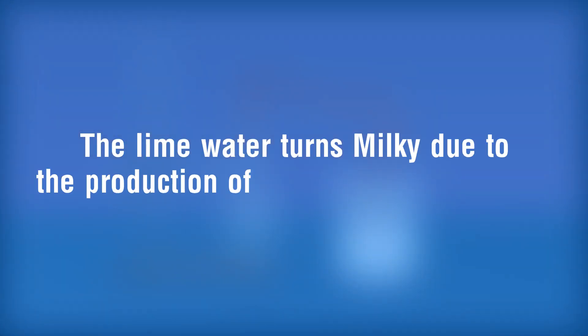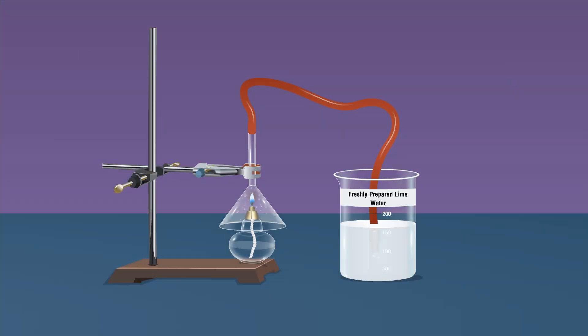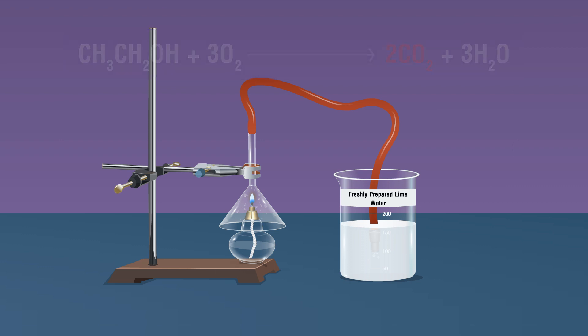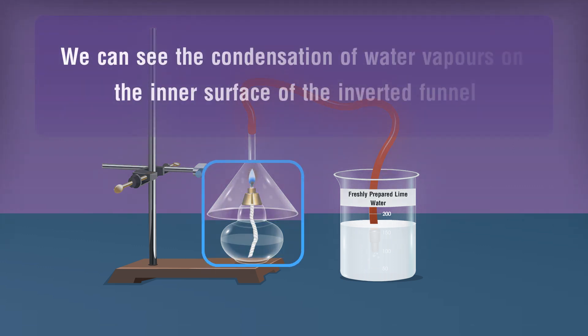CH3CH2OH + 3O2 gives 2CO2 + 3H2O. Observation 2: We can see the condensation of water vapors on the inner surface of the inverted funnel.